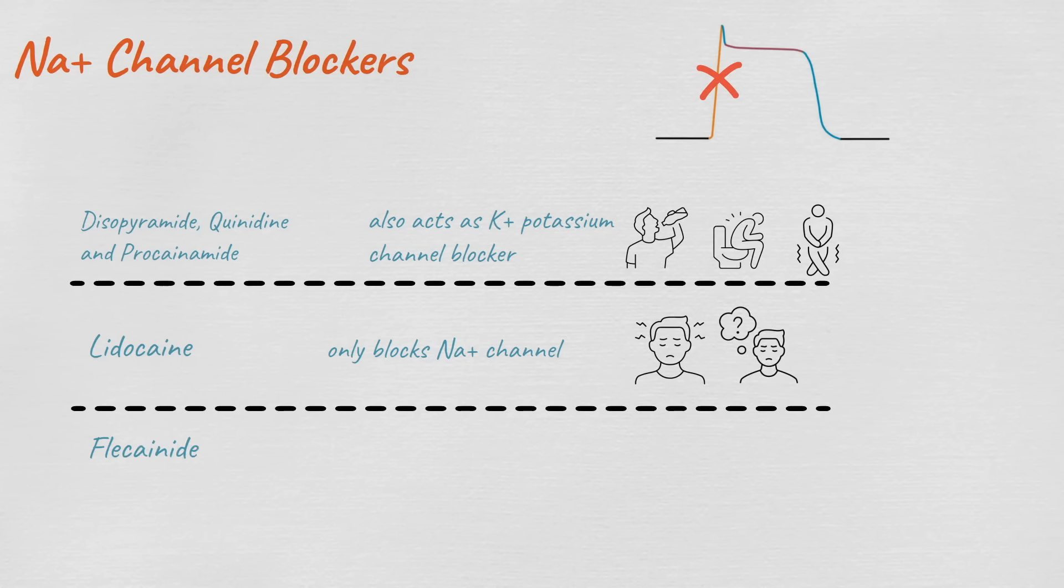Then we have flecainide and propafenone, which are sodium channel blockers but have no effect on the duration of action potential. For flecainide, it blocks the potassium channels, but for propafenone, it has a beta receptor blocking effect. They are both contraindicated in structural heart diseases such as heart failure and myocardial infarction.